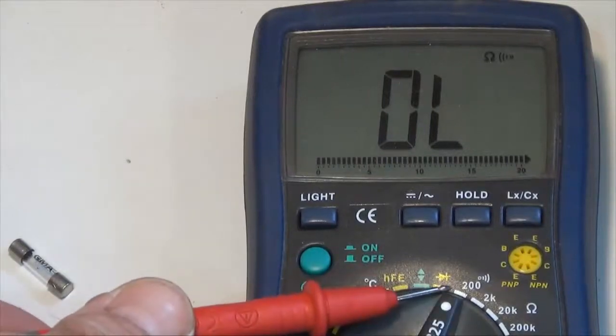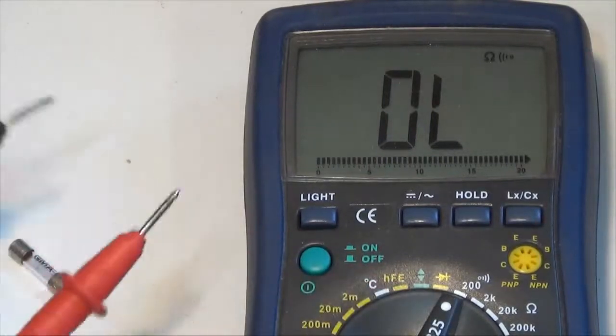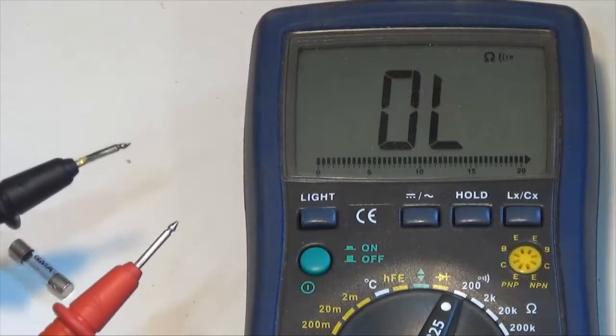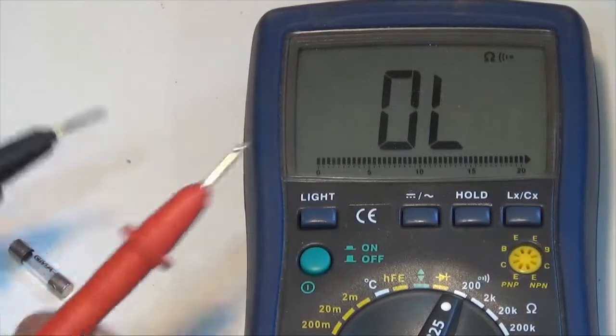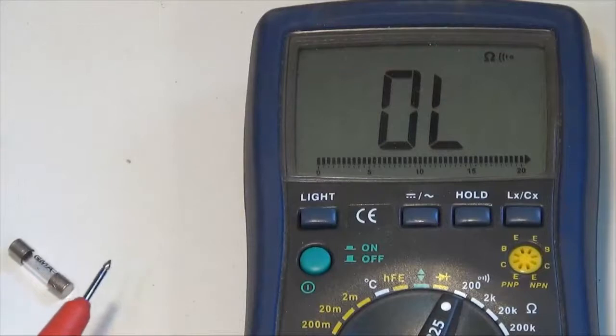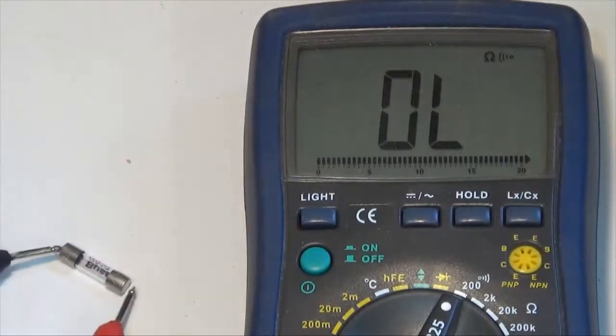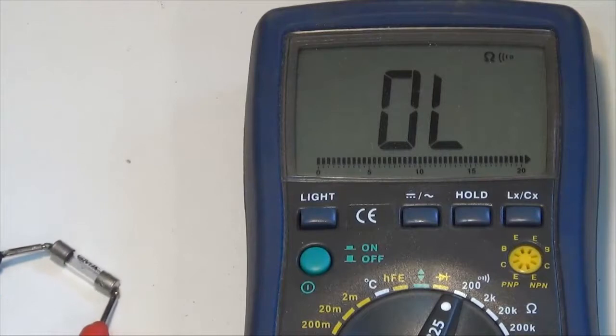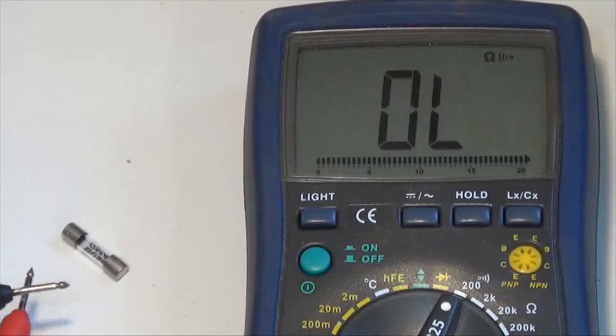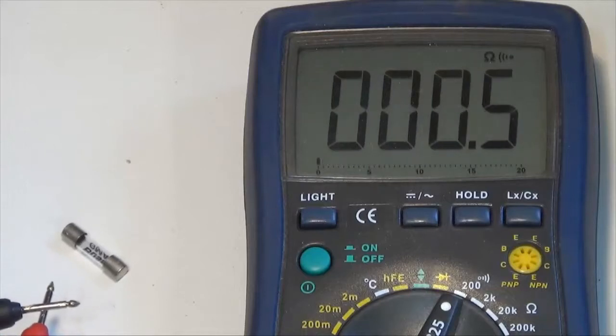You can see it's set right here. So right now, with my leads just like this, this is an infinite resistance. So that's why I'm getting an overload. So let's just measure the fuse that I pulled out. There's the fuse I pulled out. And it's not doing anything.